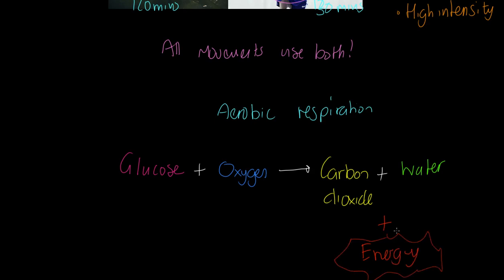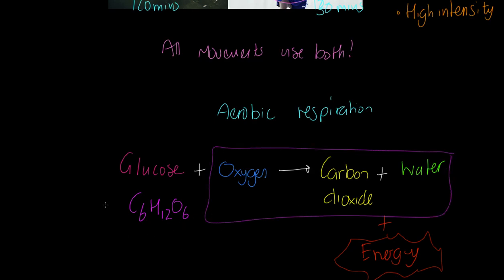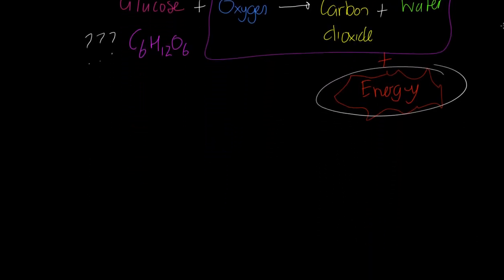That equation is really important. In symbols: C₆H₁₂O₆ + O₂ → CO₂ + H₂O + energy — it involves lots of sixes and you could balance it with your chemistry knowledge. Glucose is structured in a particular way — I'll leave it for you to discuss with your teacher. The energy released here powers movement and all metabolic processes.